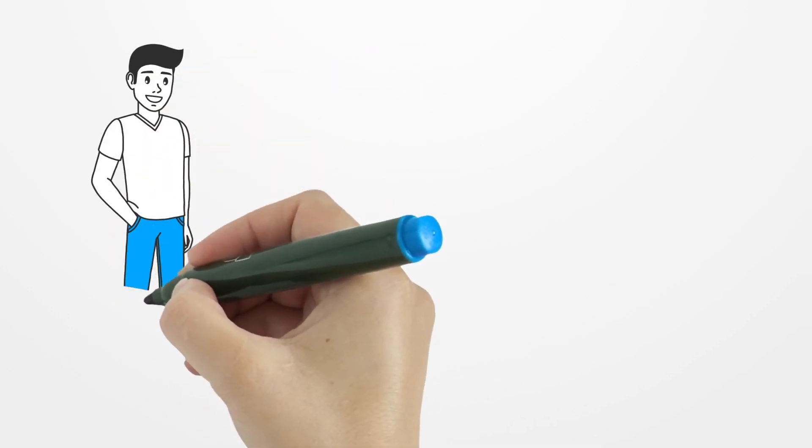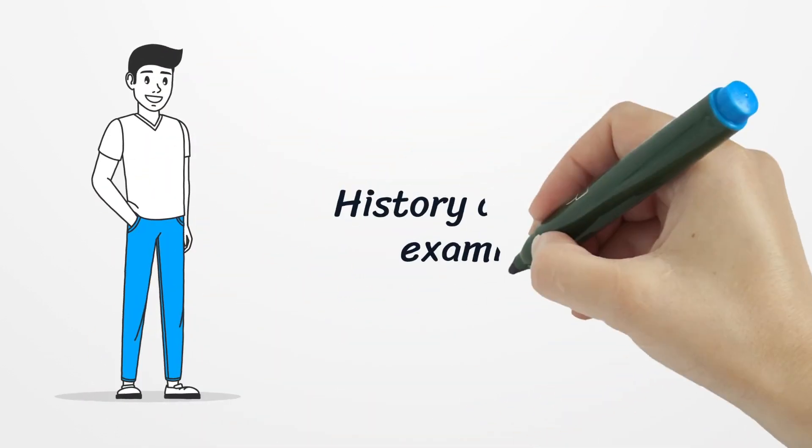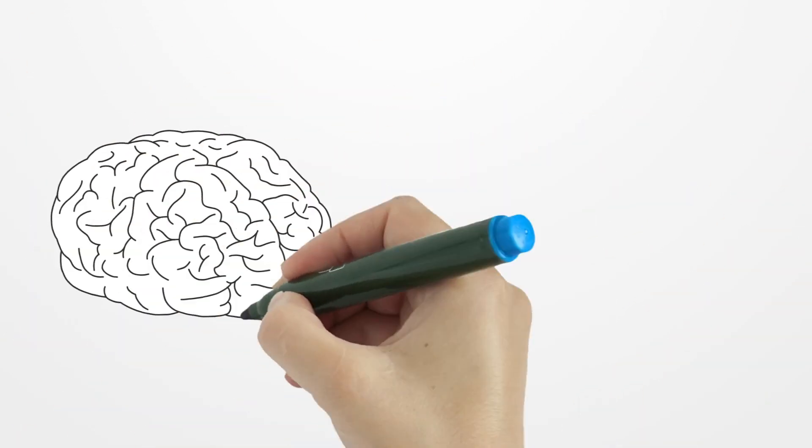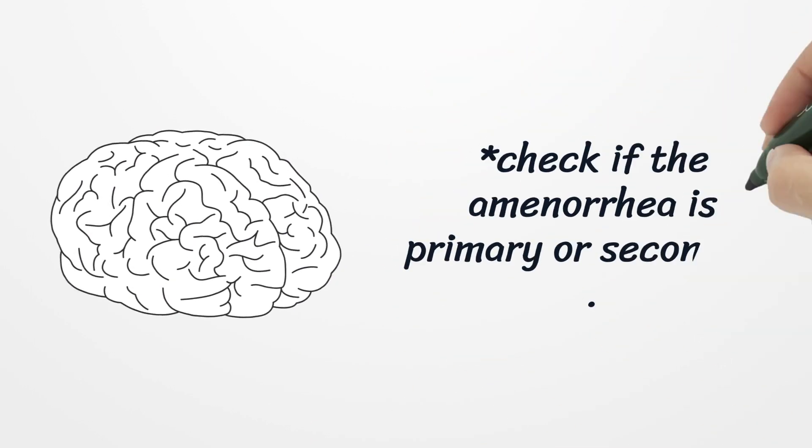History and physical examinations. Begin by determining whether the amenorrhea is primary or secondary. If it's primary, ask the patient at what age her mother first menstruated because age of menarche is fairly consistent in families.